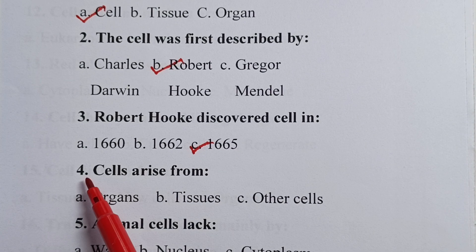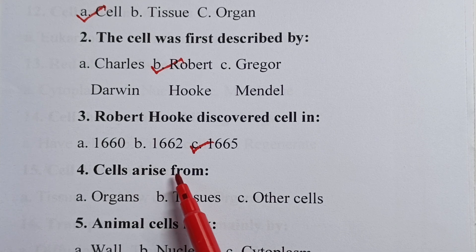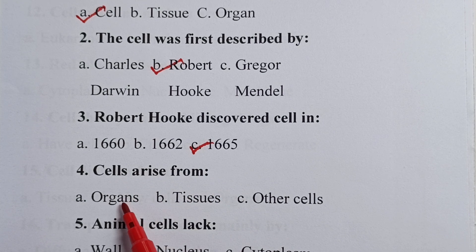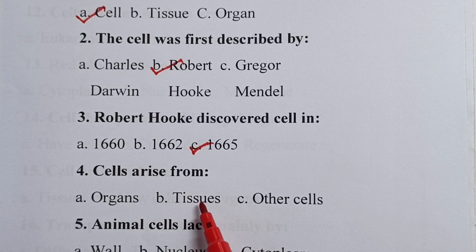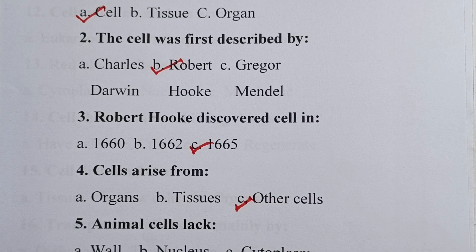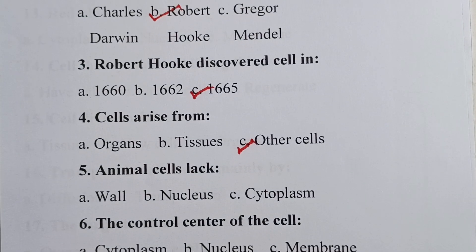Question four: cells arise from — is it organs, tissues, or other cells? Your correct answer is other cells. So, existing cells come from pre-existing cells.